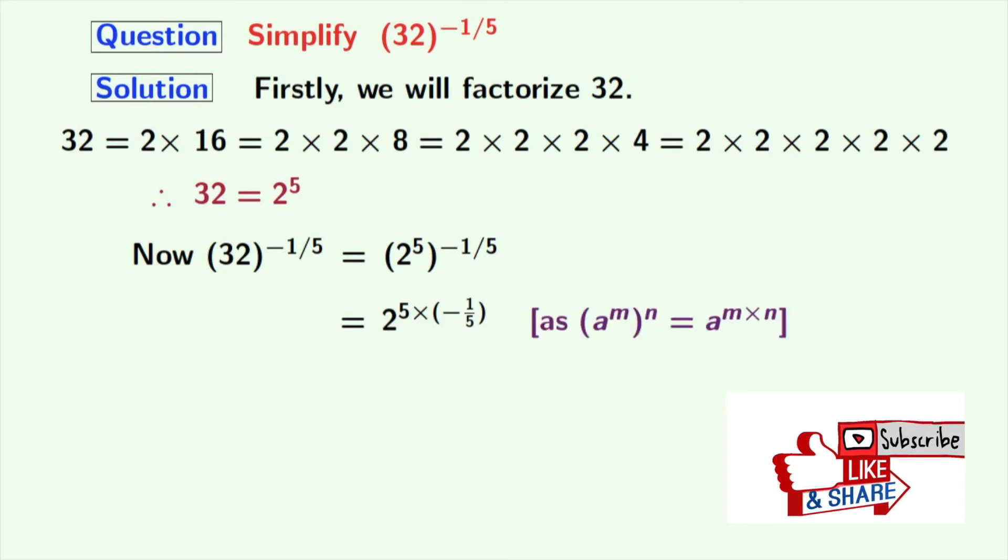As we know that a power m whole power n is equal to a power m times n. Here a is 2, m is 5 and n is minus 1 by 5.